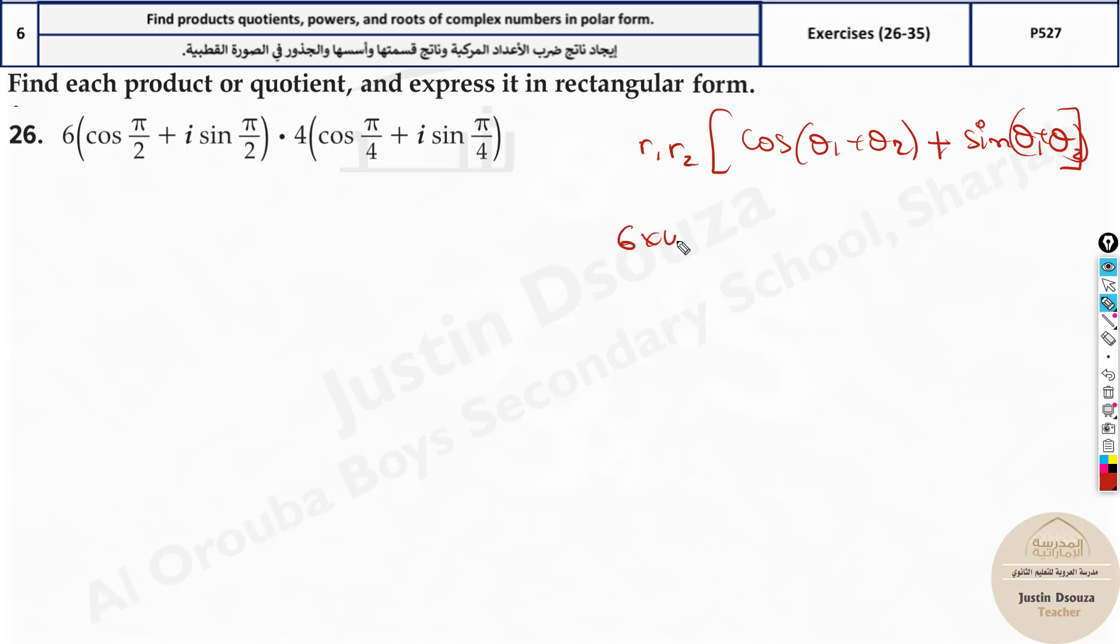Now, over here, it will be 6 times 4. That's 24. And over here, it will be cos pi by 2 plus pi by 4. And over here, we will have plus sine. Okay, I forgot to write the i. i sine. Again, pi by 2 plus pi by 4. And that's the answer. So, here will be 24. And we have cos. Now, this is half pi. This is 1 4. It will be 3 4th pi. You can directly write it. 3 by 4 pi or 3 pi by 4 plus i sine 3 pi by 4. This is the polar form.